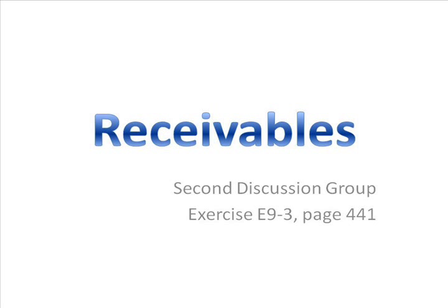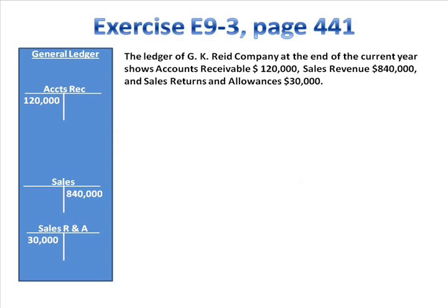In this discussion, we're working Exercise 9-3 on page 441 from the textbook. I invite you to turn there and read with me. Exercise 9-3 says: the ledger of our company at the end of the current year shows accounts receivable of $120,000, revenue of $840,000, and sales returns and allowances of $30,000. This is similar to the exercise we worked at the end of lecture on Monday.